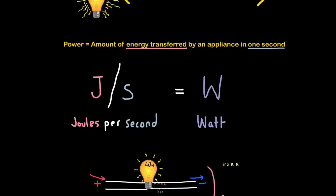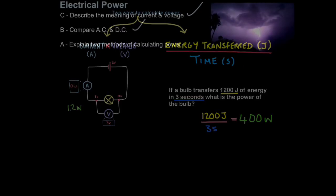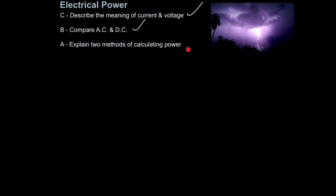So the key points here are you must be able to recognize the definition of power, maybe it's a multiple choice question, it's the amount of energy transferred over time. Energy and time, that's the key thing, therefore it's measured in joules per second or watts. And just remember there are two ways of calculating power: current times voltage or energy transferred divided by time. But that is how you explain two methods of calculating power.